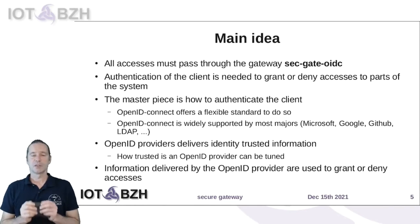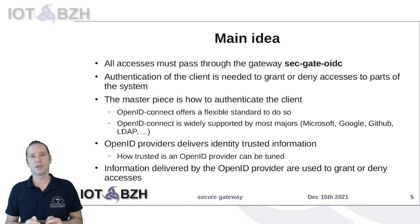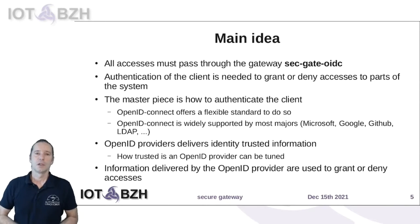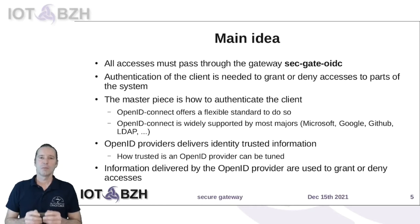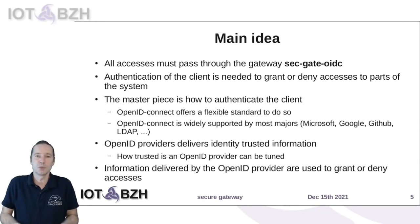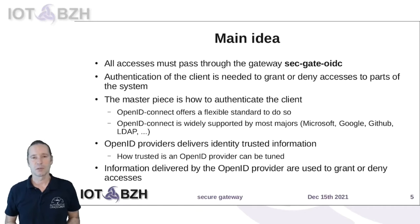OpenID Connect is a flexible standard, widely supported, and has a design that allows extension. Primarily, OpenID Connect delivers information on the user — not their name, but what the user claims to be. In some circumstances, we can get more information about the user.